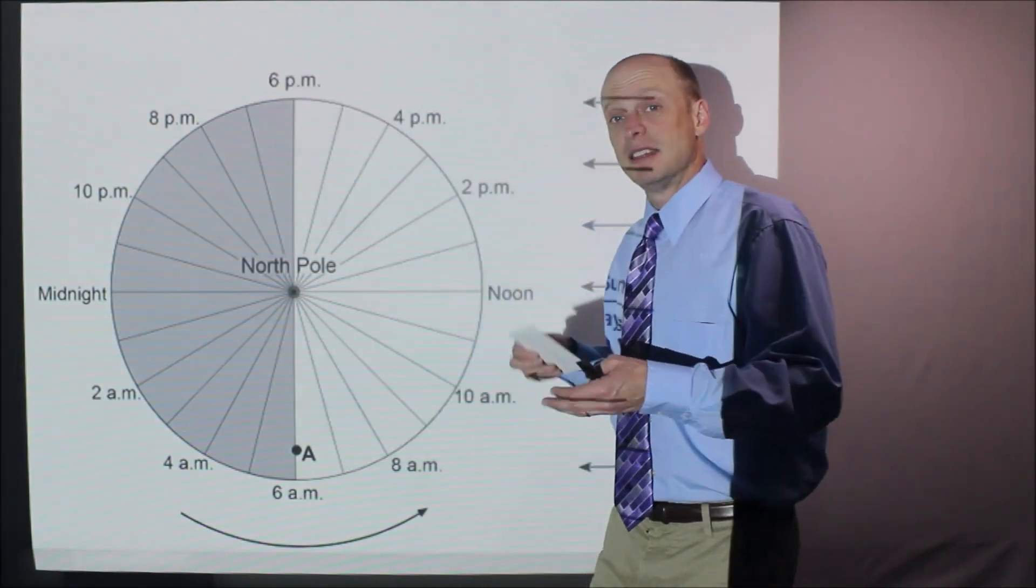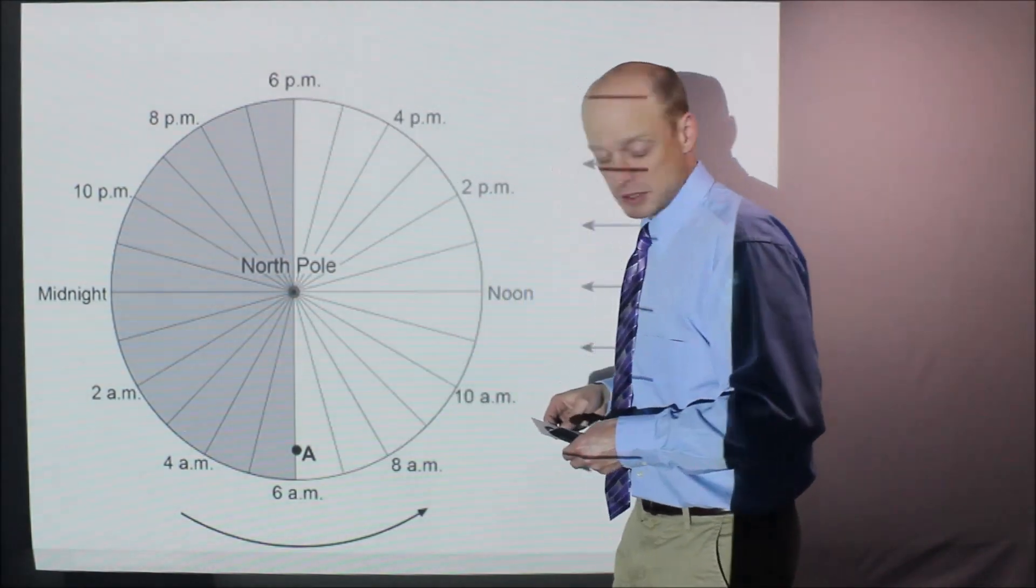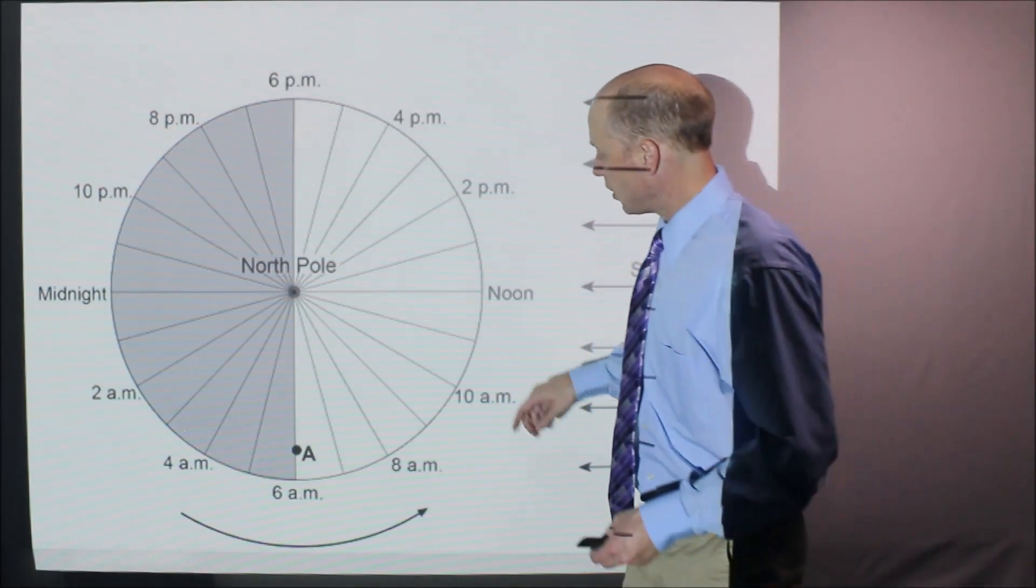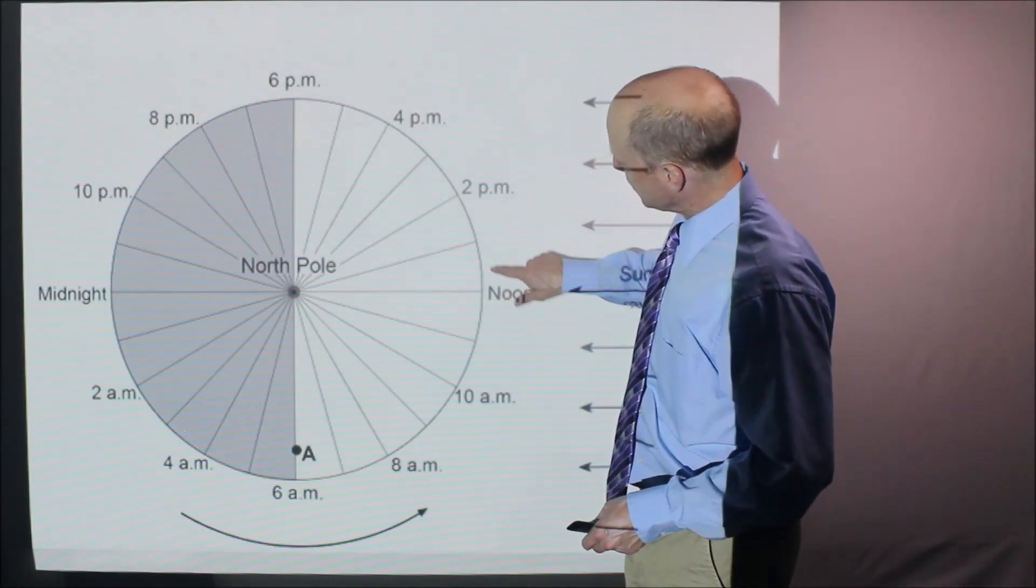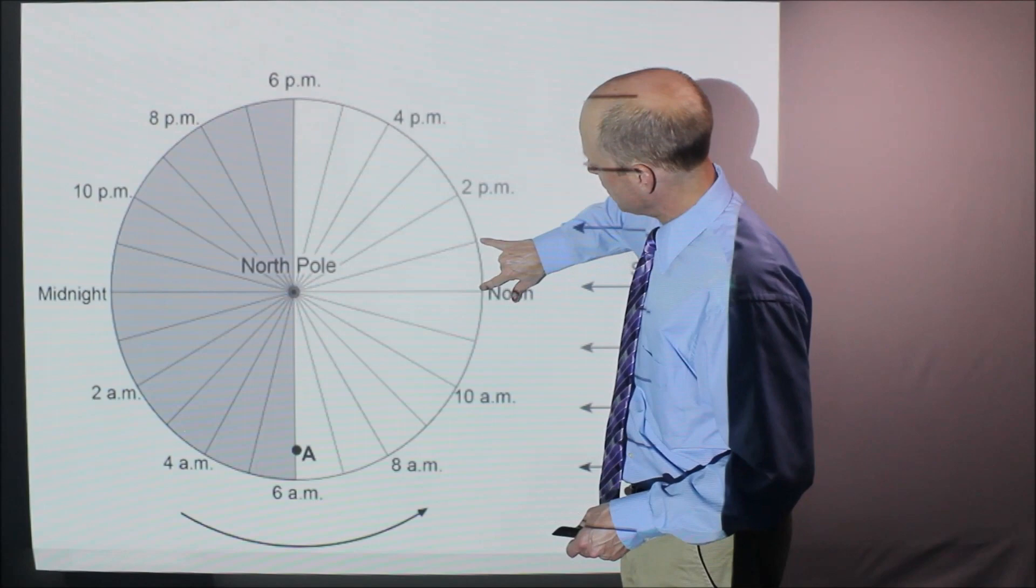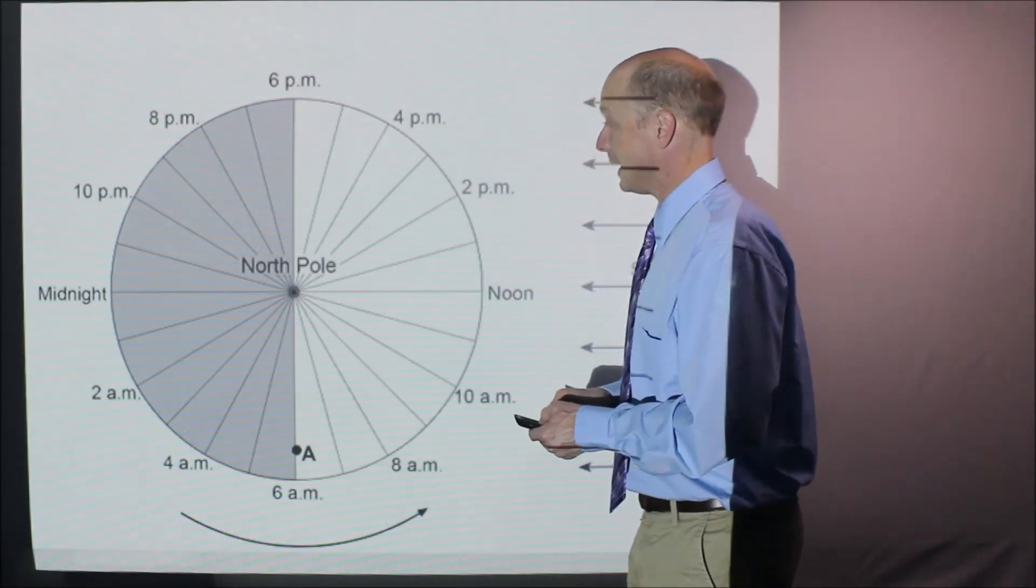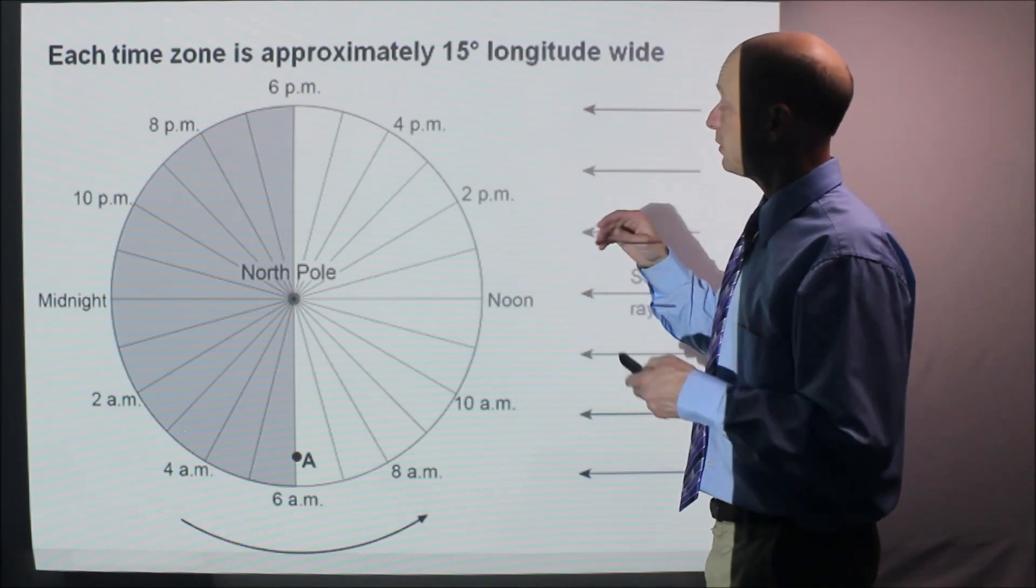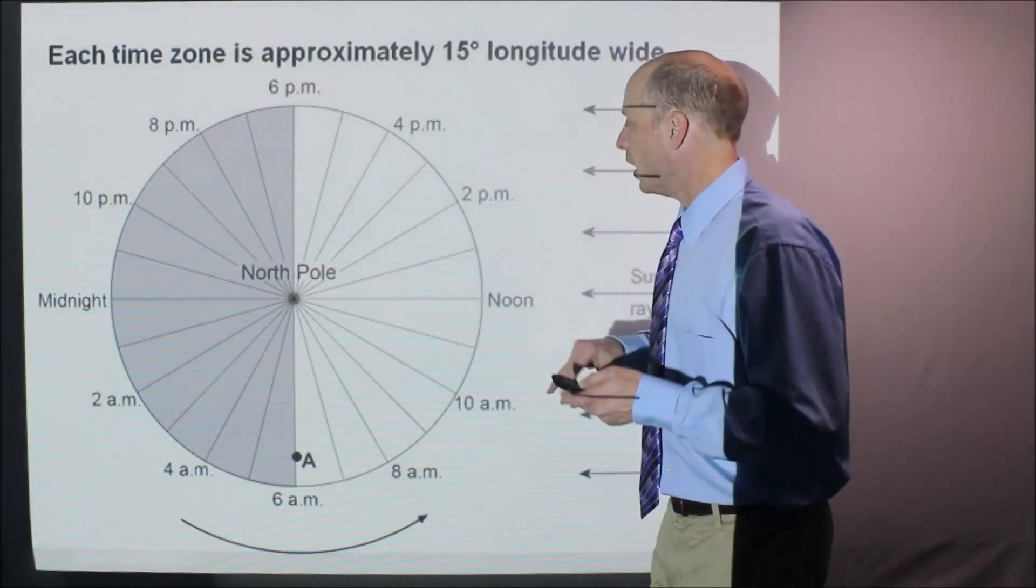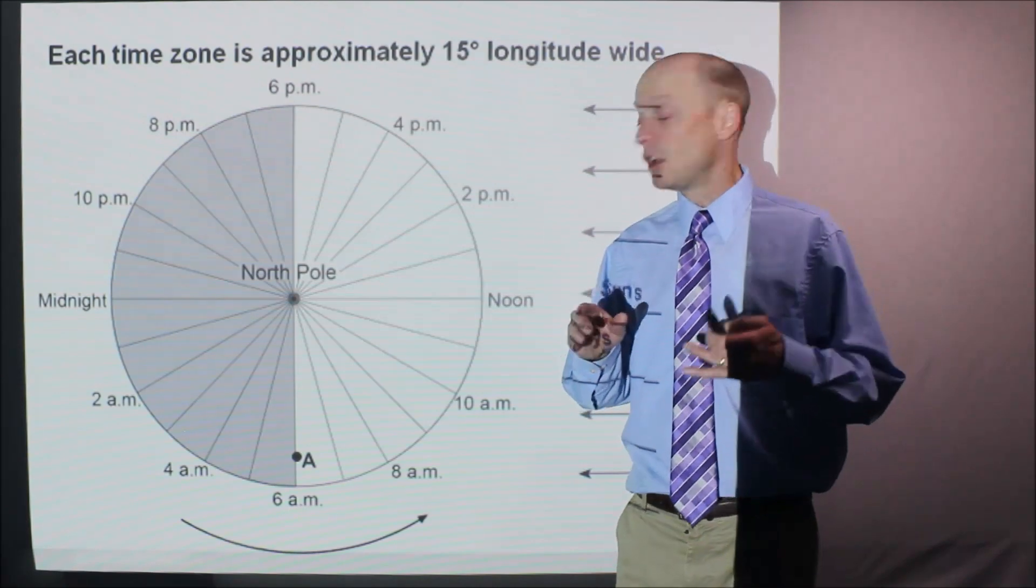Okay, so because of that, this is why we have the need for time zones. Time zones are, and this is noon, that's one, that's two, that's three. So each one of these is one hour. These are 15 degrees longitude wide. Each time zone is 15 degrees longitude wide. About. That is a key thing to know.